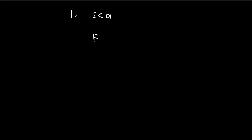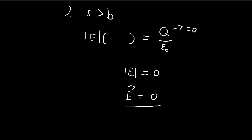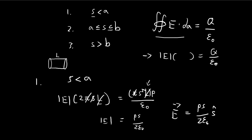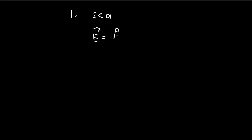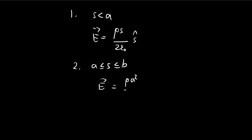To summarize: for the first case (s < a), the electric field is ρs/2ε in the radial direction; for the second case (a < s < b), it's ρa²/2εs in the radial direction; and for the third case (s > b), the electric field is zero.